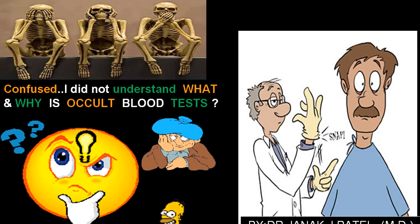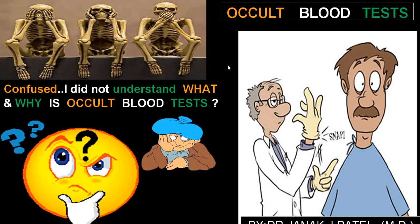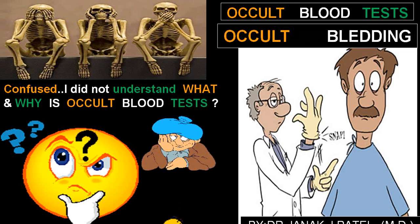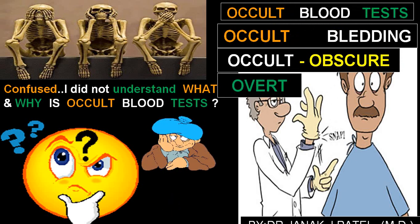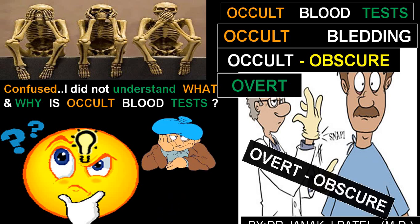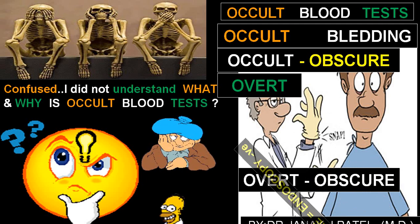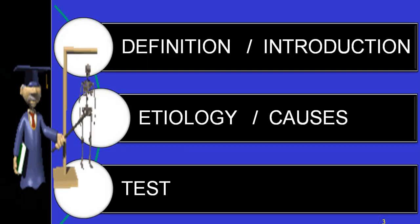What is occult blood loss? What are the other terminologies utilized? We call it occult bleeding. There is something called obscure, and there is also the term occult and obscure. Overt means which you can see by your naked eye — clearly there is bleeding, either hematemesis, hematochezia, or bleeding per rectum. There is also the term overt obscure. We will be explaining those. A pure terminology called obscure is endoscopically negative, where you cannot identify the cause. We will deal with three big headings: introduction, etiology, and the tests available.